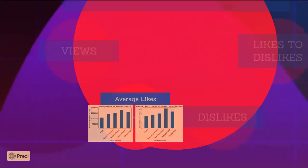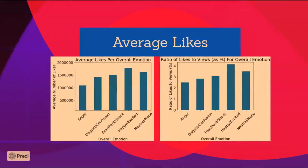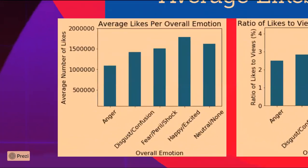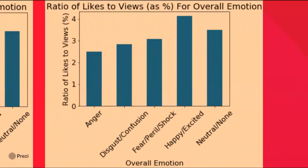I then plotted average likes per overall emotion. Interestingly, happy/excited got the most average likes, and anger got the least average likes. One thing to keep in mind is that happy/excited was the emotion used the most, and anger was the emotion used the least in thumbnails. So this insight could be from the limited dataset, in which case I'll need more data, or there's a deeper significance. To control for the number of views, I plotted the ratio of likes to views as a percent for each emotion. Happy/excited has the biggest ratio, and anger has the lowest ratio.